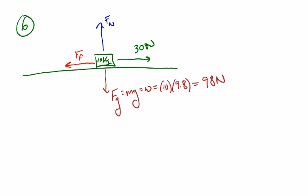Since they're pulling horizontally, the normal force would just equal that force of gravity in magnitude. So it would also be 98 newtons. So that's good information to know.